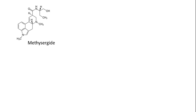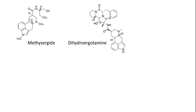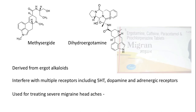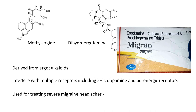Methysergide and dihydroergotamine are alpha antagonists derived from ergot alkaloids. They have significant CNS activity and interfere with multiple receptors including 5-hydroxytryptamine, dopamine, and adrenergic receptors. Despite this broad activity, they are used therapeutically because they provide excellent symptomatic relief for severe migraine headaches — whether physiological or drug-induced. More than 50 formulations exist that include methysergide, dihydroergotamine, and other ergotamine derivatives.